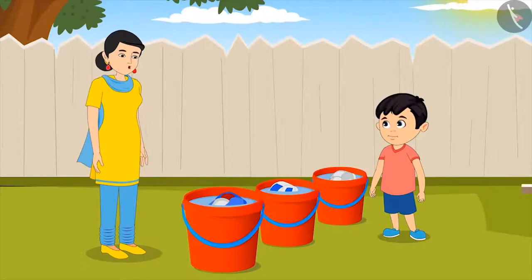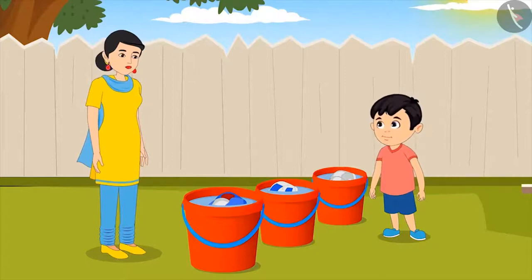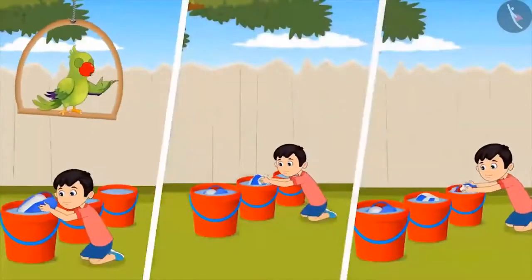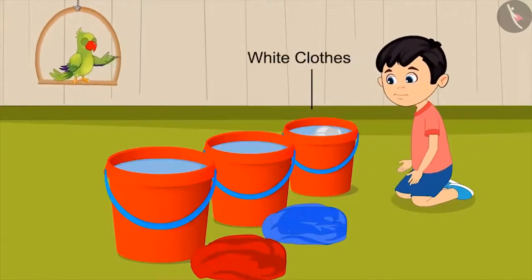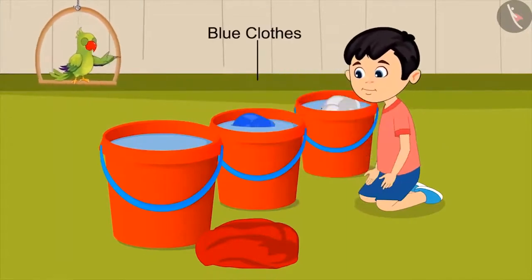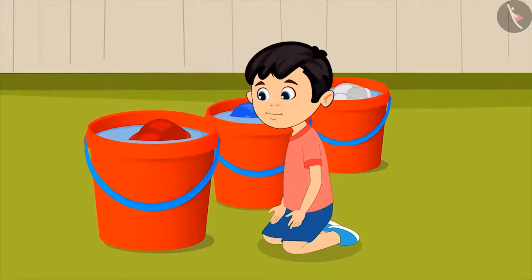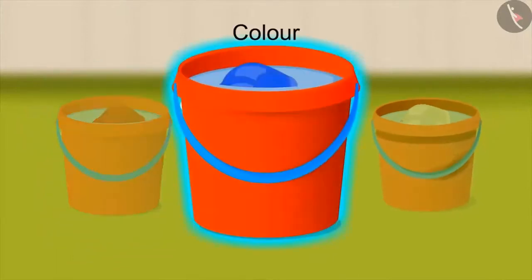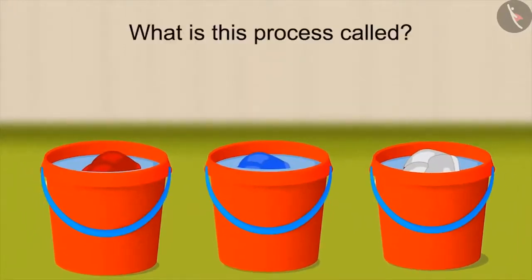Yes, son. I had asked you to separate all the clothes on the basis of their colour, but you have separated them based on their types. Chotu takes all the clothes out of the bucket and then puts all the white clothes in one bucket, blue clothes in the second bucket, and all the red clothes in the third bucket. On the basis of the characteristic of colour, Chotu has classified and made different groups. It is called classification.